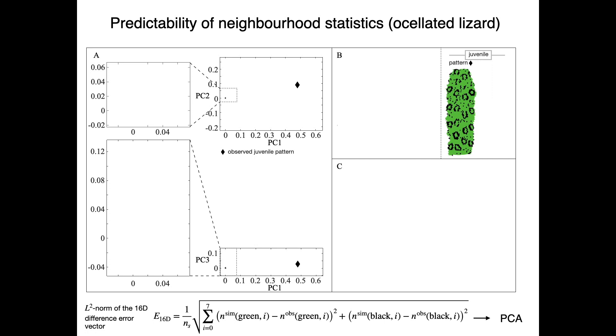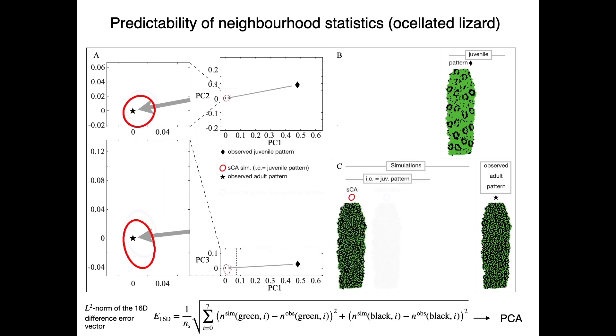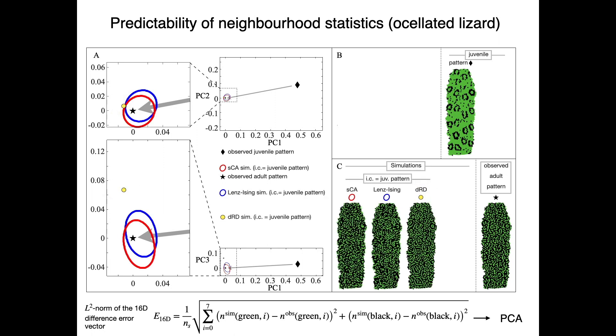A principal component analysis illustrates that in real lizards, the juvenile develops towards the adult pattern positioned at the zero error coordinate. We then show that all models generate patterns with low errors.